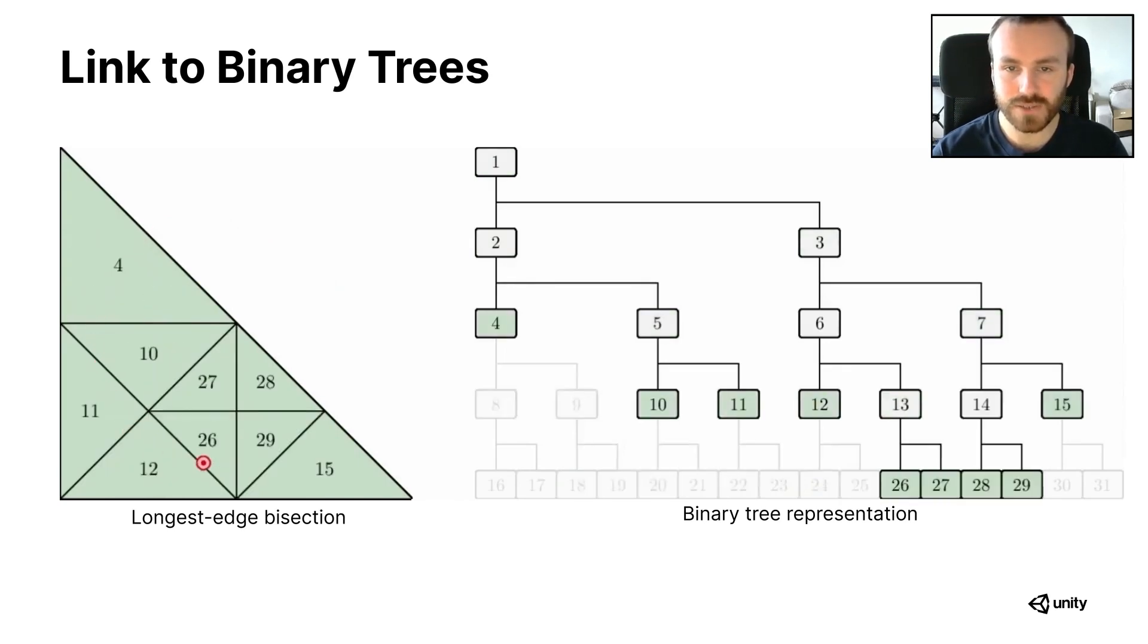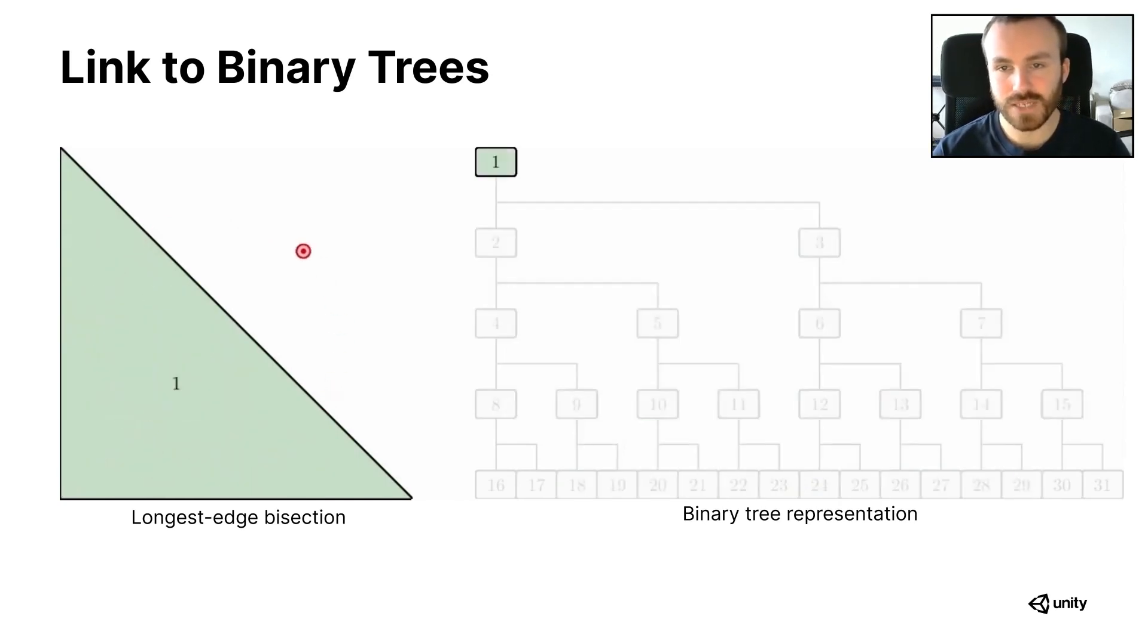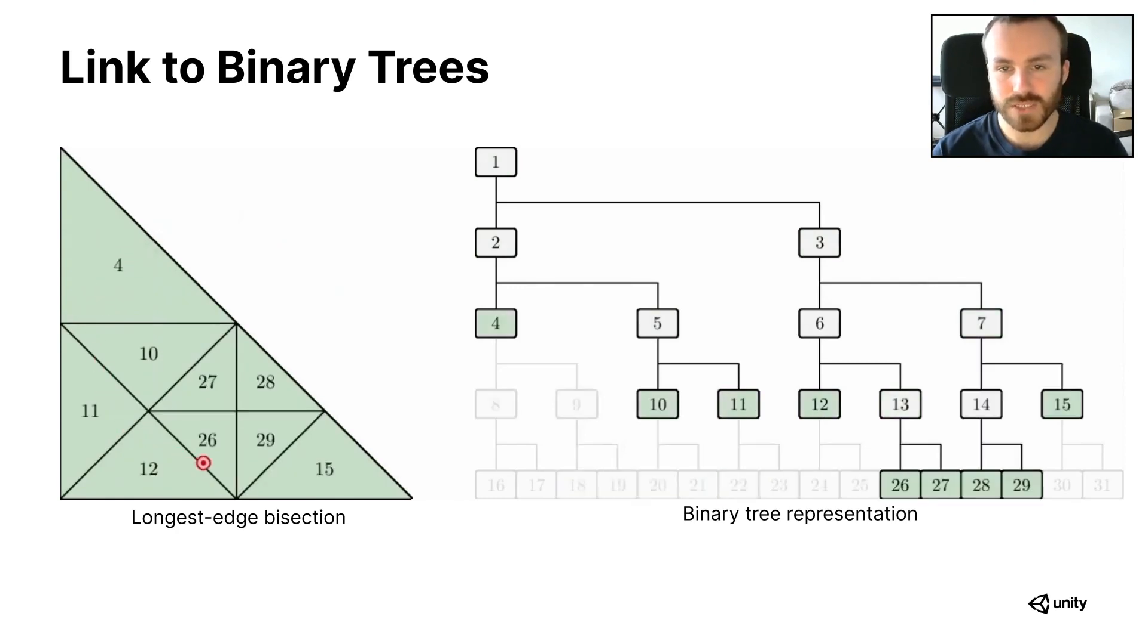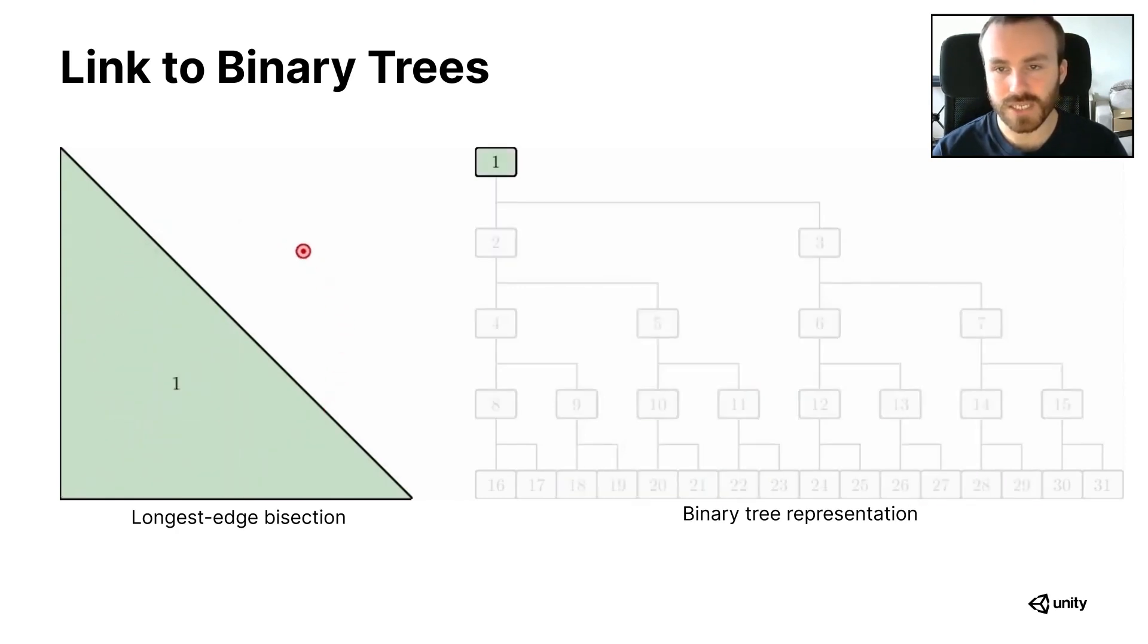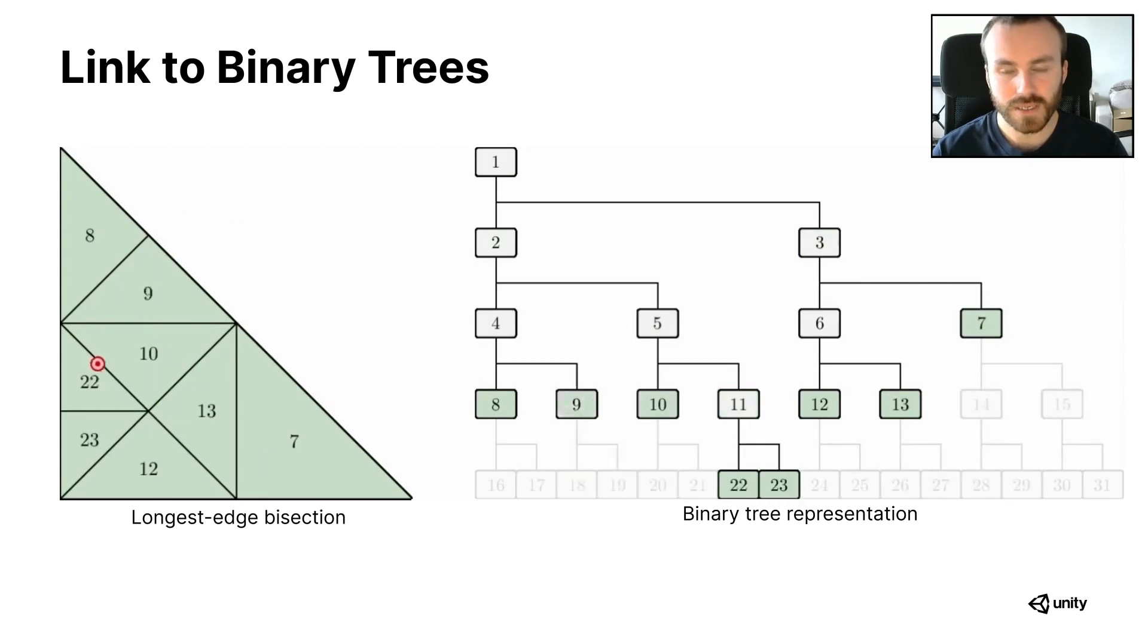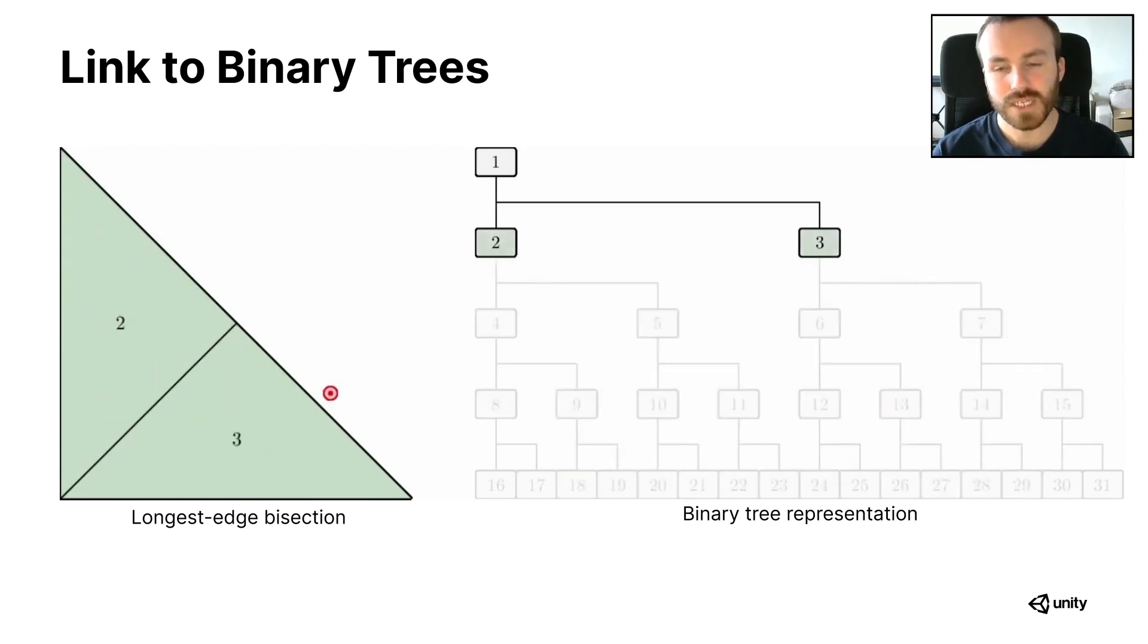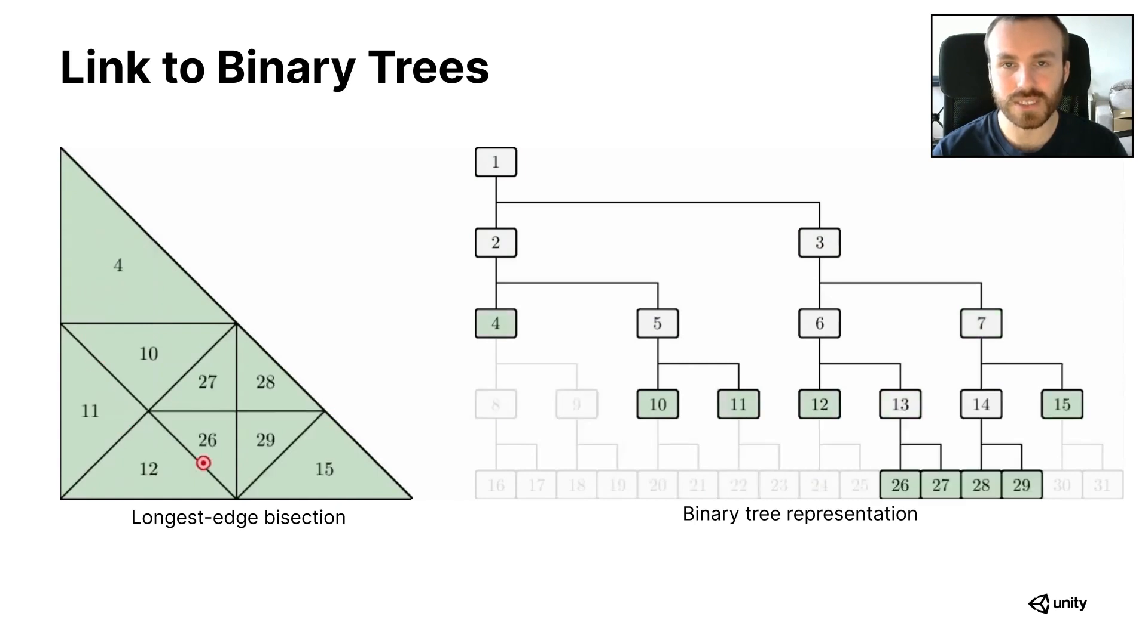Bisecting a triangle in two means creating two new leaf nodes in the binary tree, and vice versa merging two triangles means deleting two sibling leaf nodes in the binary tree. What concurrent binary trees offer is a way to do these three operations concurrently in parallel by introducing a novel data structure.